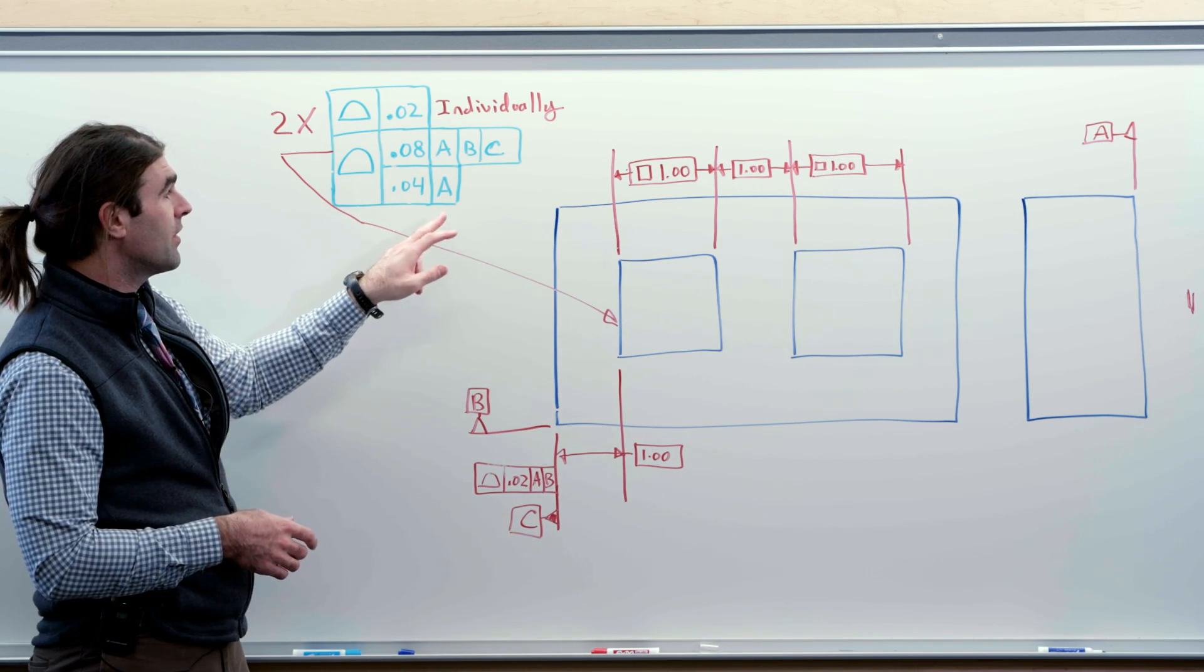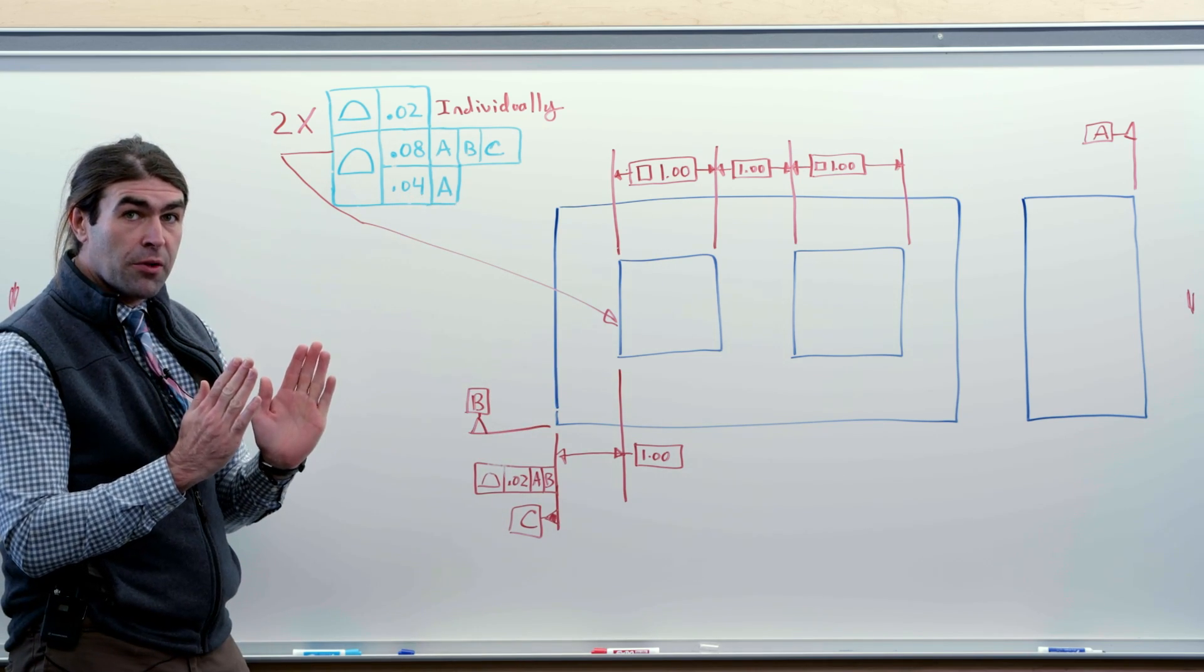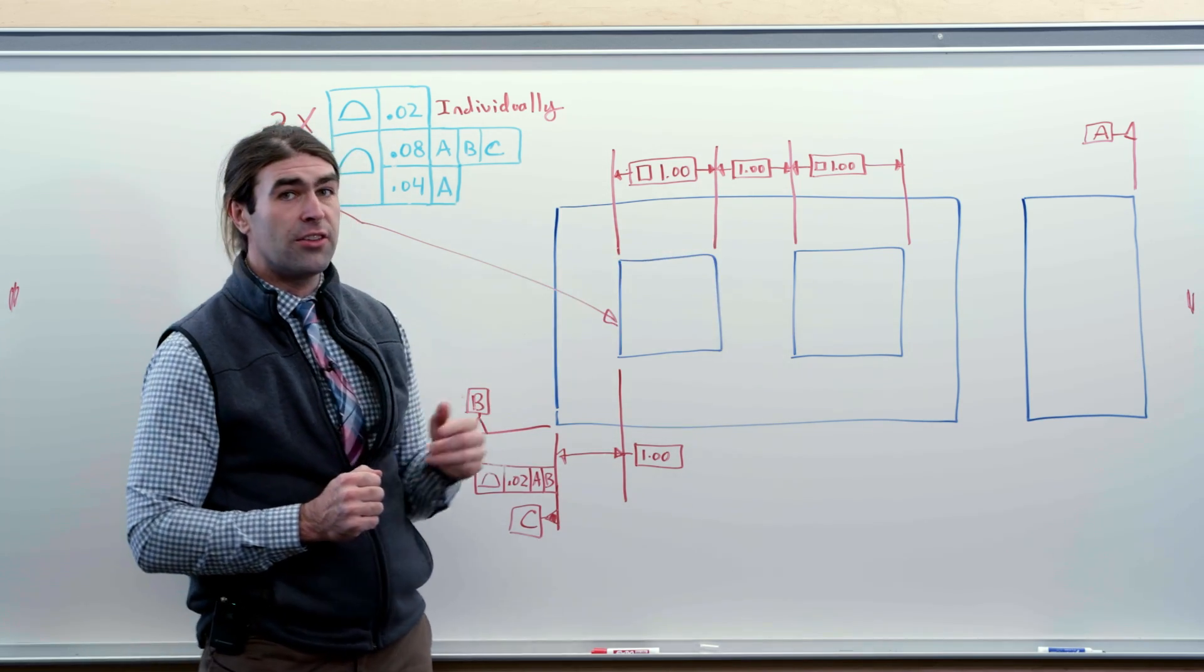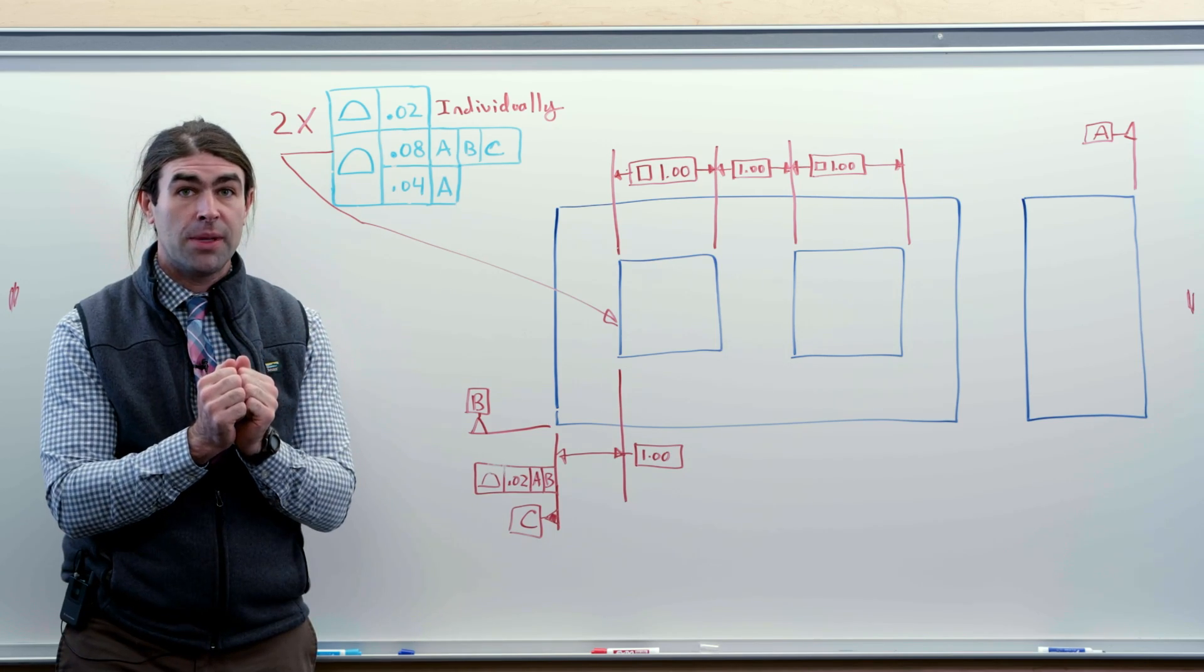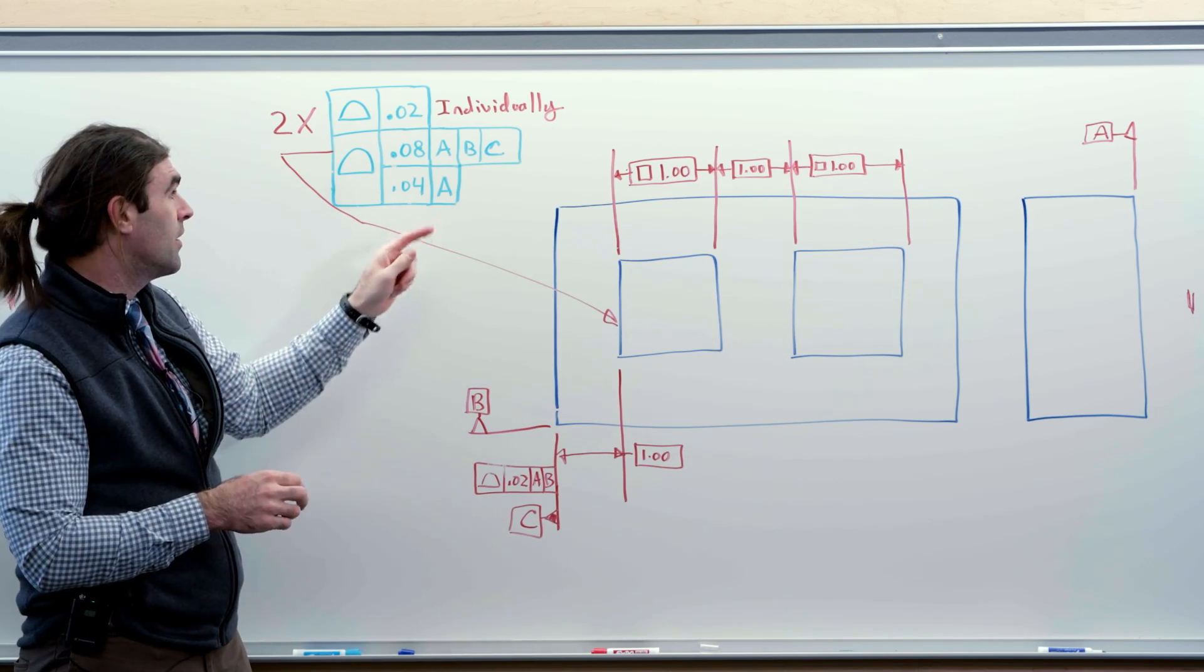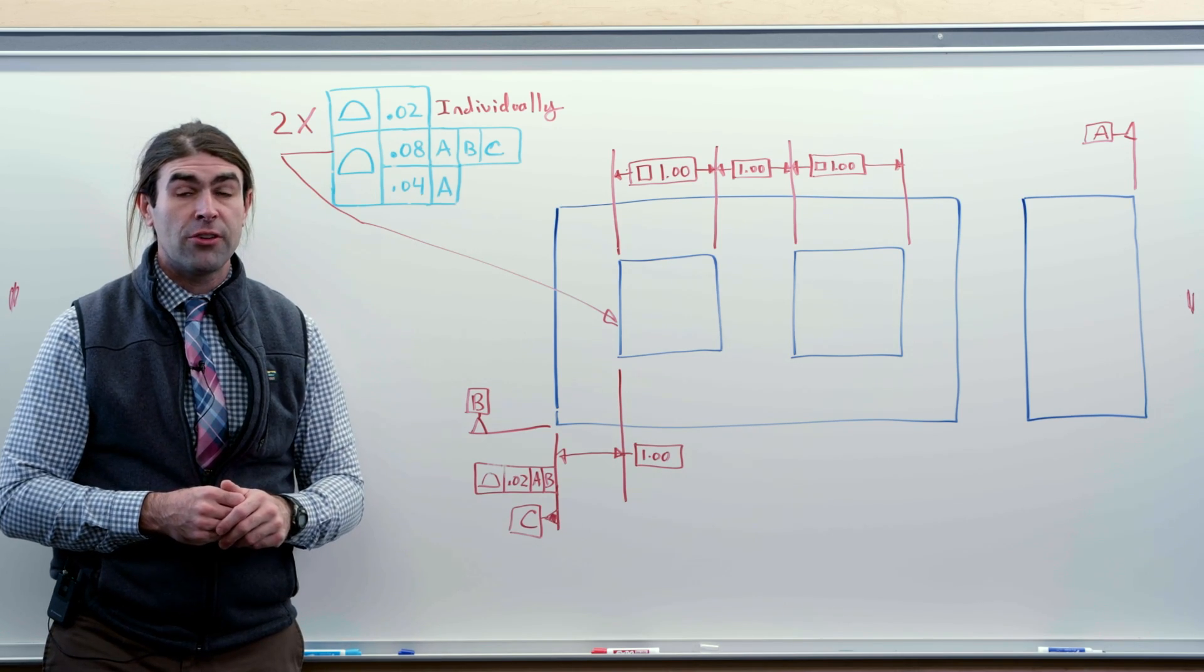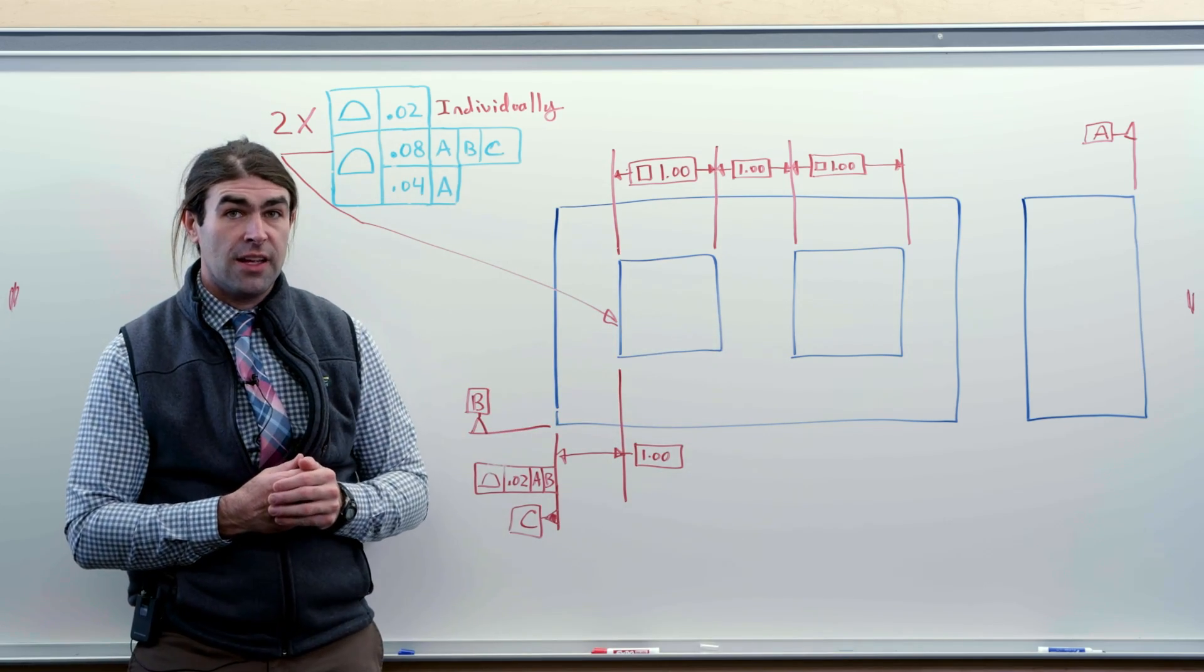So we've got 40 thousandths to A. That's essentially just saying each of these squares is perpendicular to A, and they're locked together with this one inch basic dimension. So that limits how close they can be to each other. This 80 thousandths means they can get closer together than this 40 thousandths. Now, if it's applied to a single feature, that doesn't matter, but when you've got multiple features in a pattern, that does matter, and it's going to affect the gap between these.